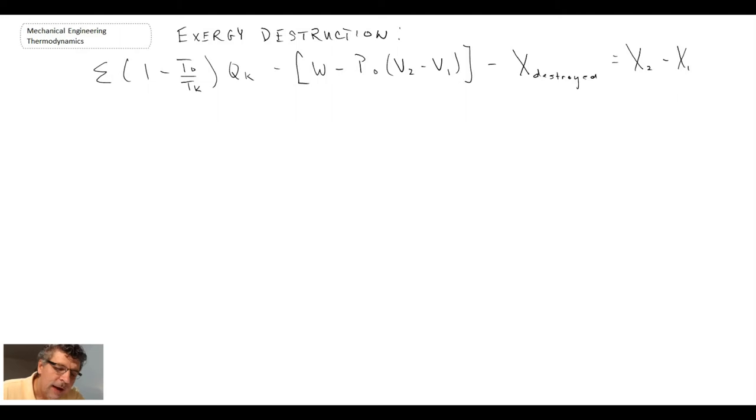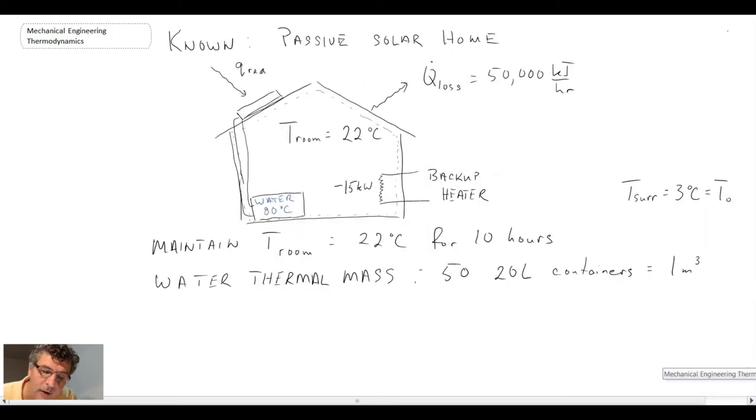Now, is there anything we can knock out of this equation? Can we knock out the heat transfer? Well, it depends where we define our boundary. But with it currently defined around the house, as you can see here, we can't because there's heat transfer taking place.